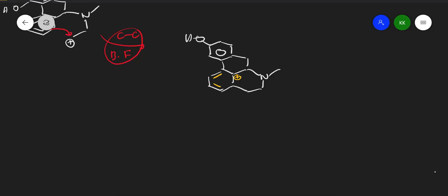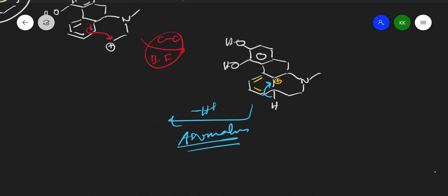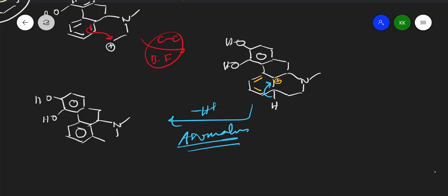The other pi bonds remain as they are, along with the OH groups. The positive charge is removed because a hydrogen is present — electron density flows in, neutralizing the positive charge, and a hydrogen is lost. This reaction happens to aromatize the ring, since aromatic compounds are more stable (lower energy). The reaction proceeds quickly to give aromatic pi bonds in conjugation and a newly formed ring.